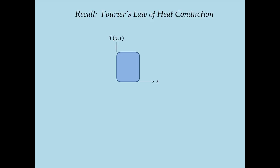This slice has thickness delta x. At the other end of the slice, the temperature is T(x,t) plus a small change. Using a truncation of the Taylor series expansion, that change equals the slope of the temperature profile with respect to distance — partial T/partial x — multiplied by delta x. That's an approximation.